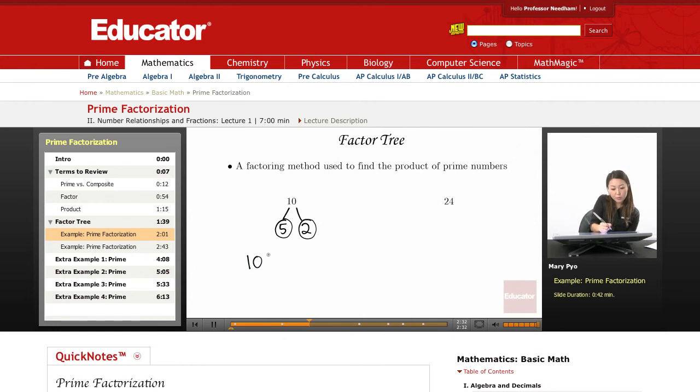So, now all we have to do is write off the answer. So, 10, the prime factorization of 10 would be 5 times 2.